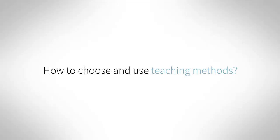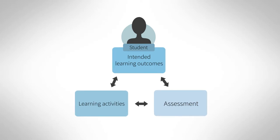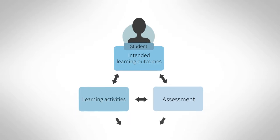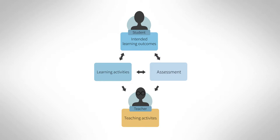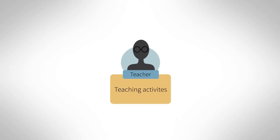I hope you are already familiar with the concept of constructive alignment. To cut a long story short, it means that the learning outcomes, learning tasks and assessment activities of your course should support each other and be in line with each other, so that the intended learning outcomes determine what the students should do during the course, which then defines the teacher's actions before, during and after the teaching period. You should choose the kind of teaching methods that ensure that students will be doing the right things for their learning.